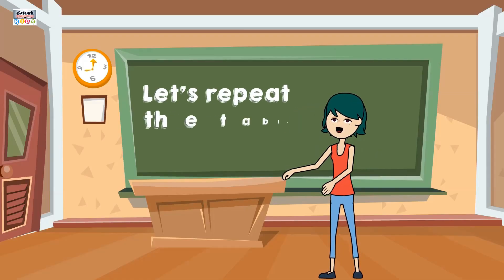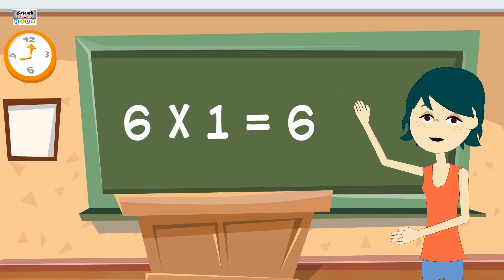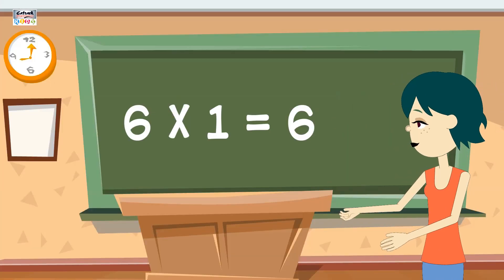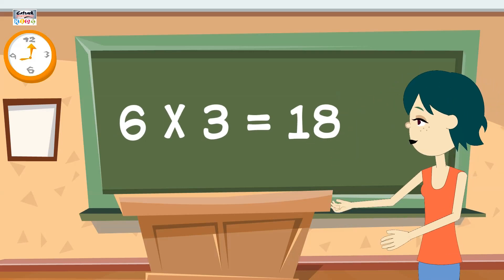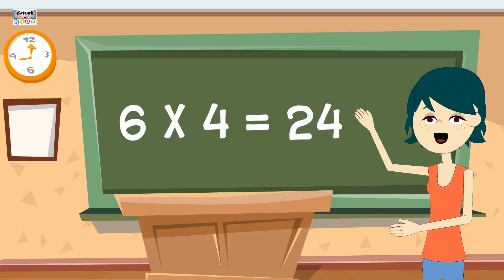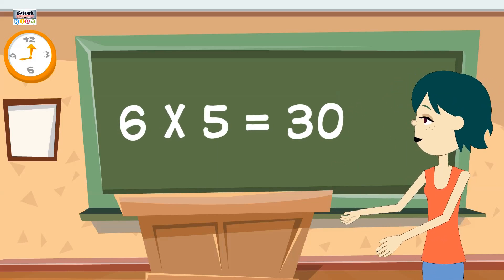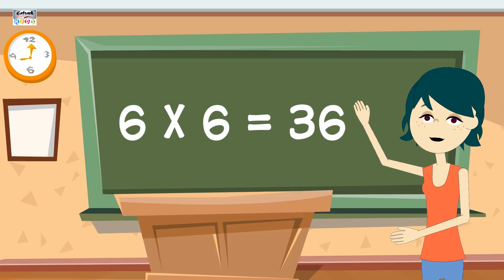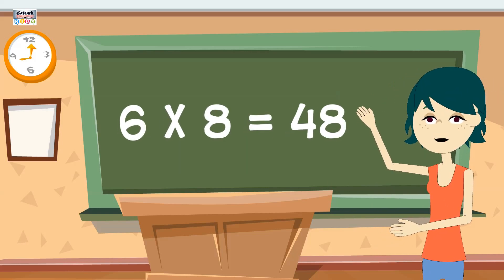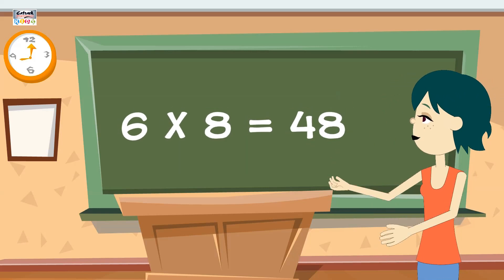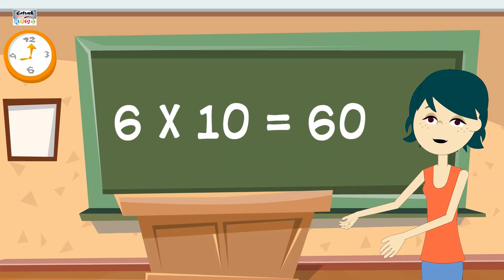Let's repeat the table of 6. 6 ones are 6, 6 twos are 12, 6 threes are 18, 6 fours are 24, 6 fives are 30, 6 sixes are 36, 6 sevens are 42, 6 eights are 48, 6 nines are 54, 6 tens are 60.